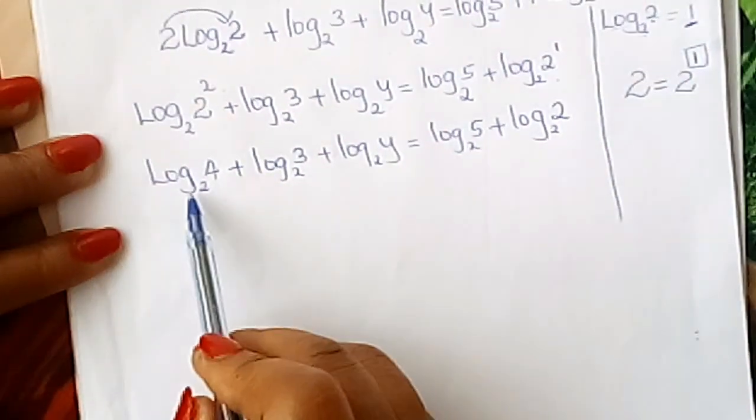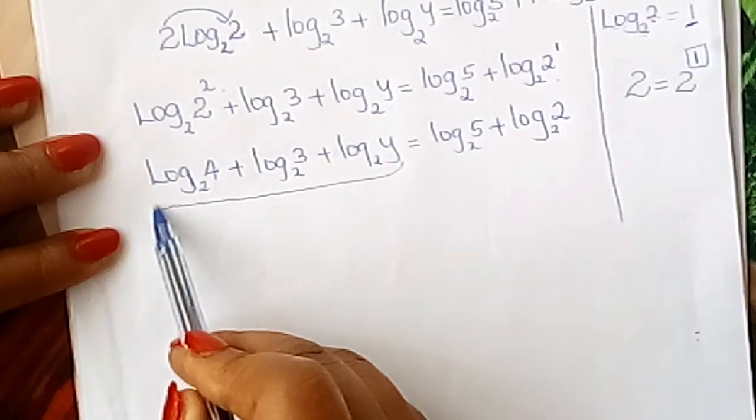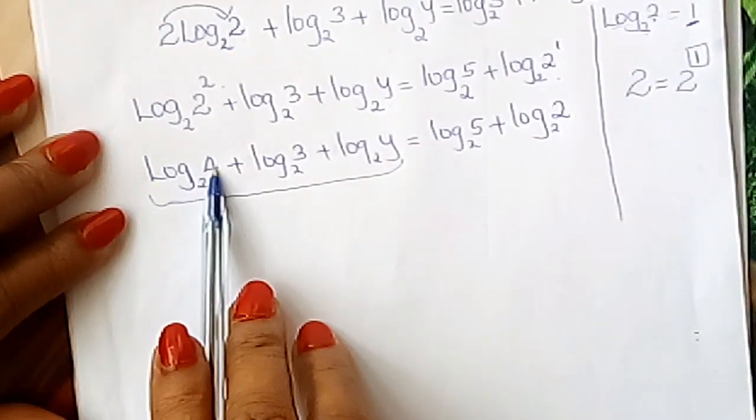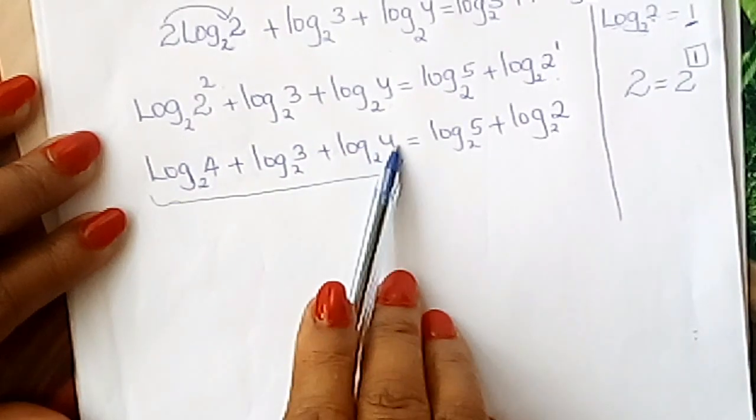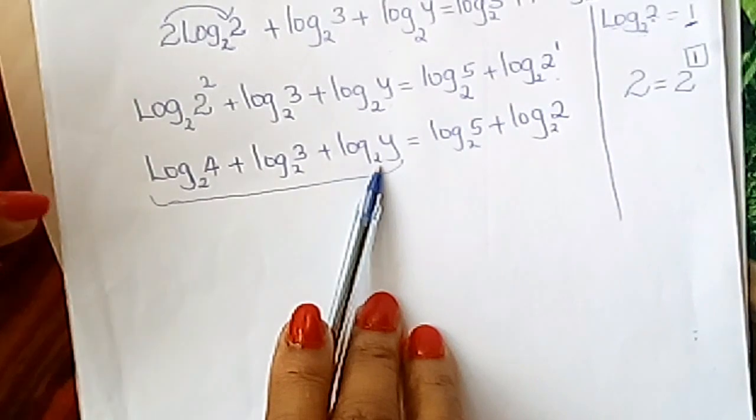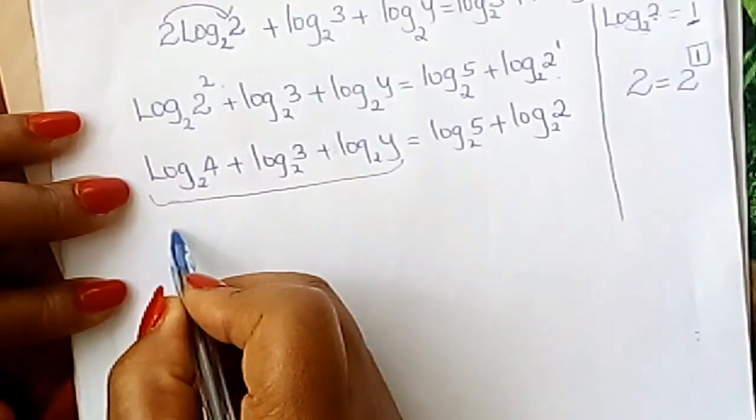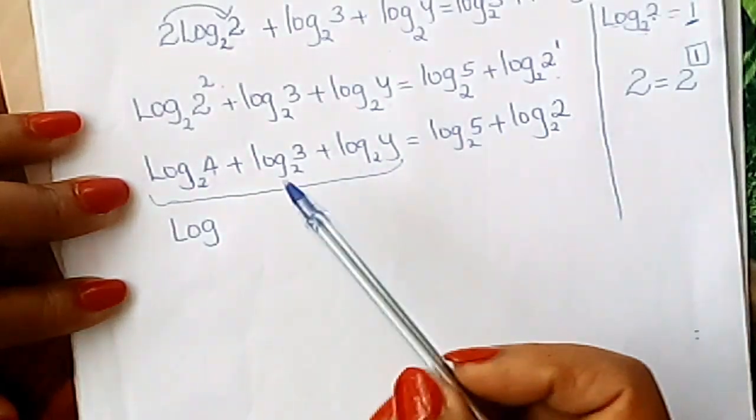From there, you look at the left-hand side of our equation. It has log₂4 + log₂3 + log₂y. According to laws of logarithms, all this is equal to log, all this is equal to log.